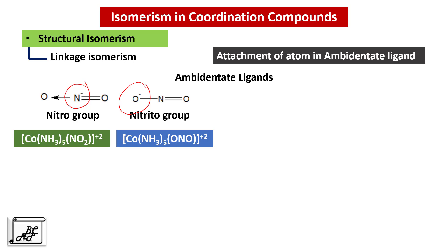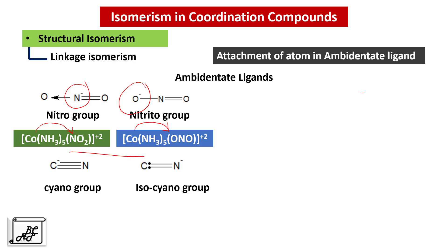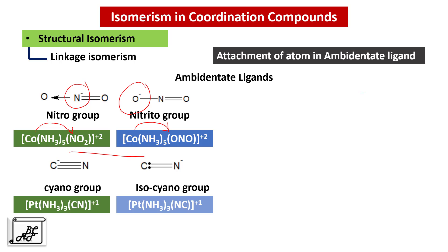These two are examples of Linkage Isomerism. Another example: cyano and isocyano groups. If coordination is from the carbon, it is called the cyano group; if coordination is from the nitrogen, it is called the isocyano group. These are further examples of Linkage Isomerism.